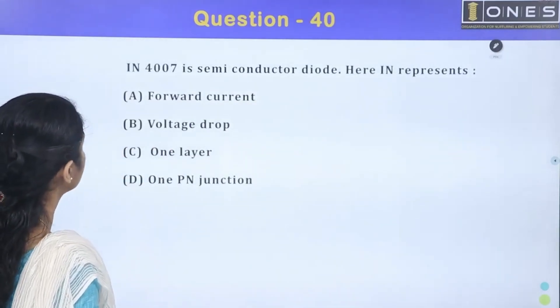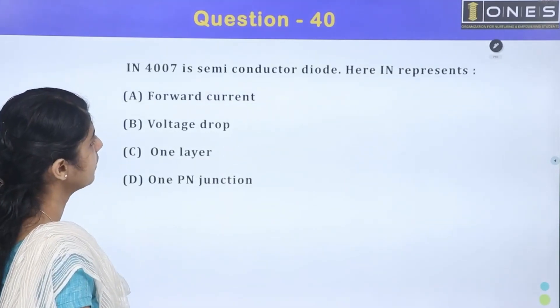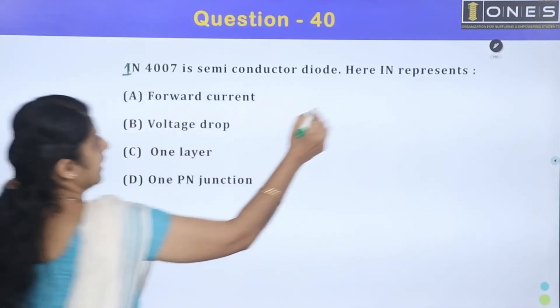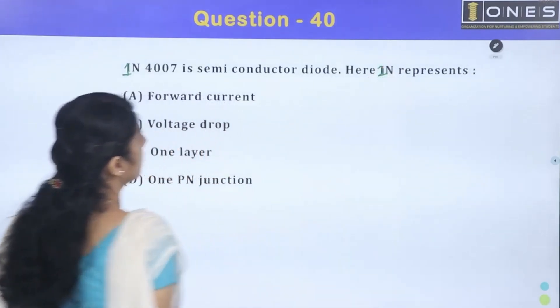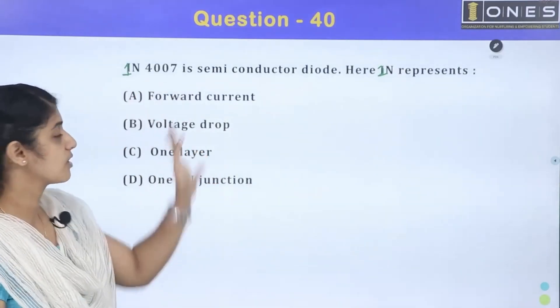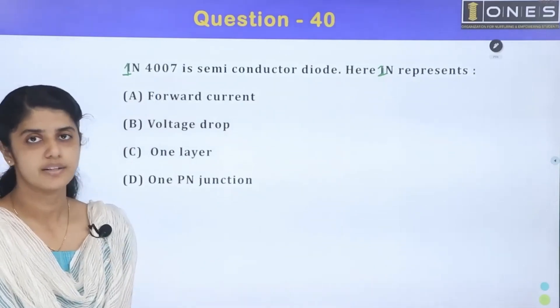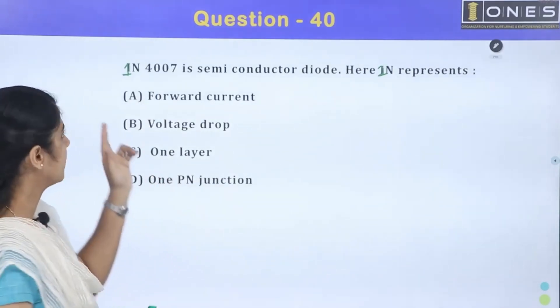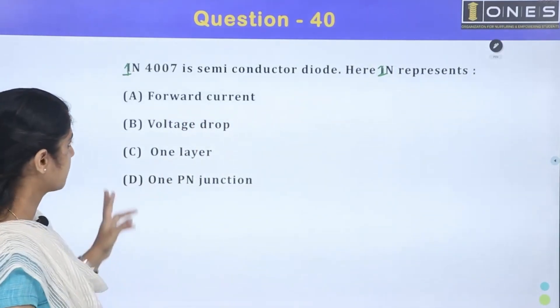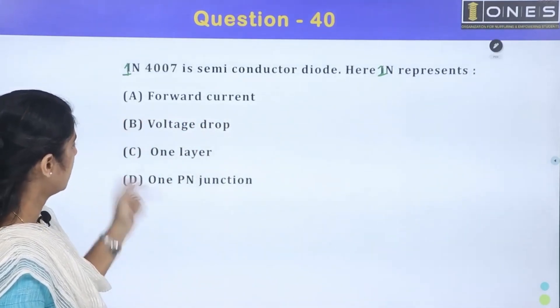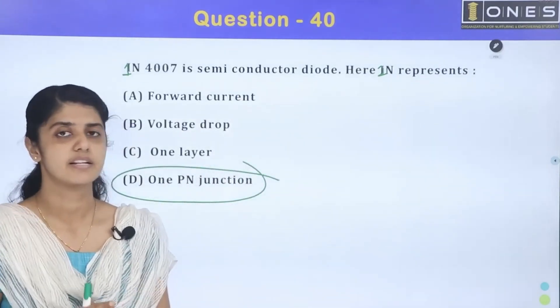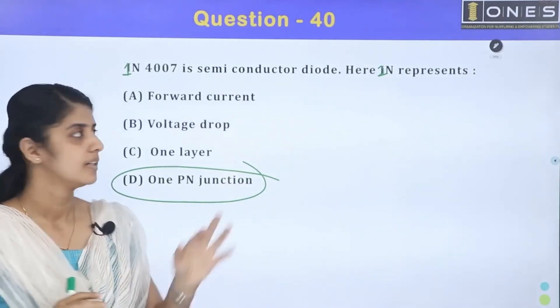Next question: 1N4007 is a semiconductor diode. Here, 1N represents what? We use the 1N4007 diode commonly. The 1N represents one P-N junction. Option D: one P-N junction. How many semiconductor junctions? One P-N junction.